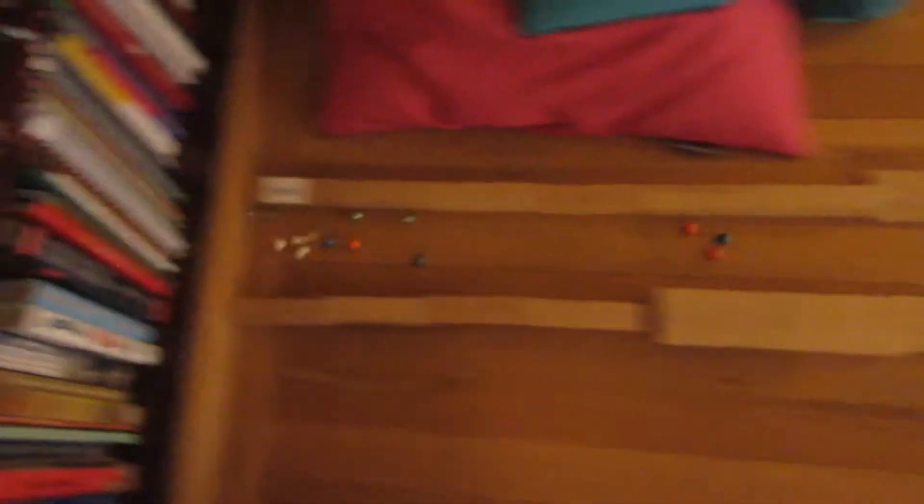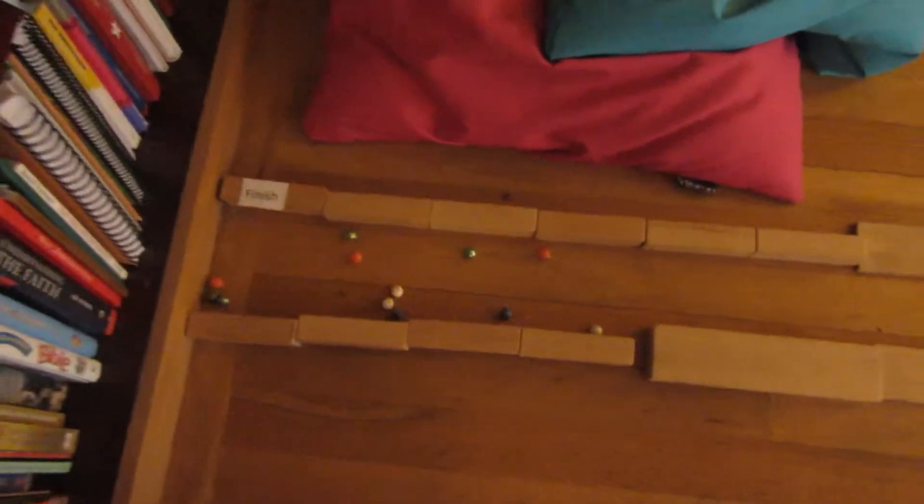Here's the second race. It looks like white's gonna come out with a huge lead. Can green take him? No, not this time.